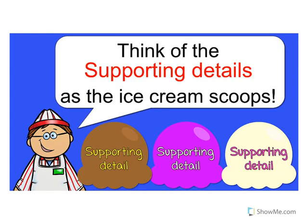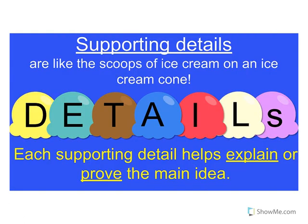Think of the supporting details as the ice cream scoops. We like to usually have three details — one, two, three scoops of ice cream. Supporting details are like scoops of ice cream on an ice cream cone. Each supporting detail helps explain or prove the main idea.